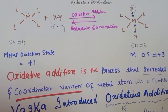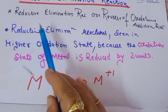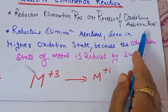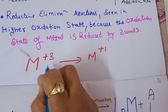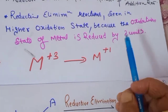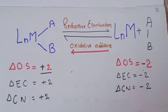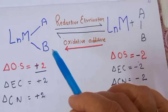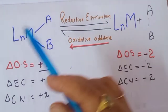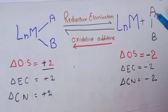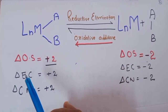Reductive elimination reactions are the reverse of oxidative addition. The reaction is seen in the higher oxidation state — the metal in the +3 oxidation state gets converted to +1. In the simple representation, a complex with two anionic ligands undergoes reductive elimination: the two anionic ligands form a bond between themselves, take away the electrons donated by the metal, and form a neutral molecule that is eliminated from the complex.